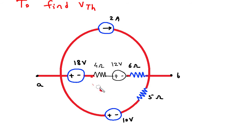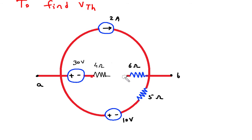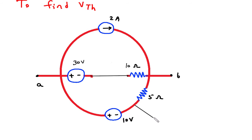As we can see, this will be 18 plus 12, which equals 30V. So we can directly write 30V here. This 4 plus 6 Ohm will be 10 Ohm directly. Now we will convert this 10V source into its equivalent current source, which will be in parallel with this 5 Ohm.